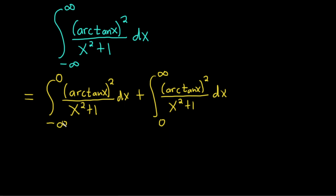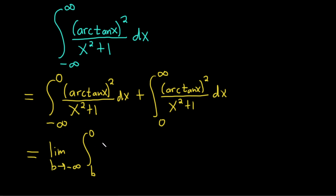Now we can replace the negative infinity with a variable. This actually turns into two limits. The first is the limit as b approaches negative infinity, with the integral from b to zero of arctangent of x, squared, over x squared plus one.